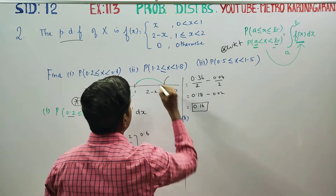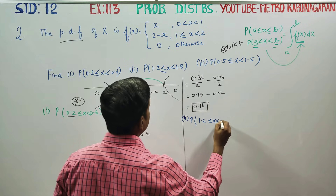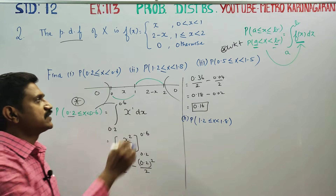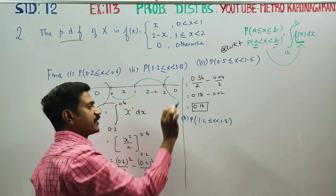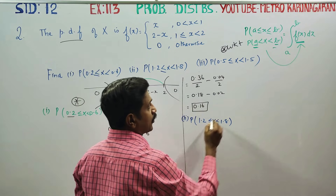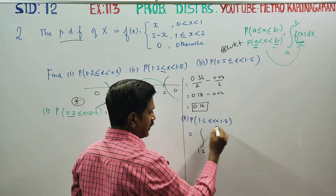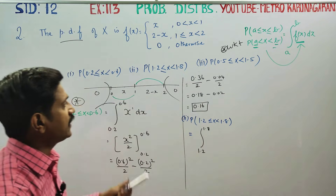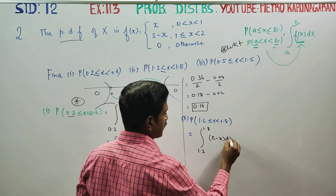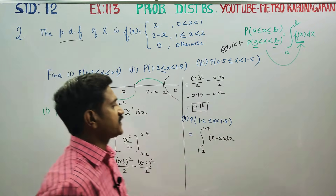The second question: probability — 1.2 less than or equal to x less than or equal to 1.8. This is the interval. The probability formula equals integration from lower limit to upper limit. The function in the interval 1.2 to 1.8 is 2 minus x dx.